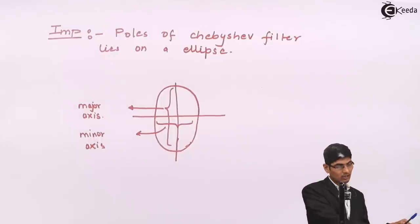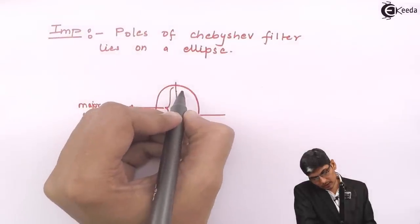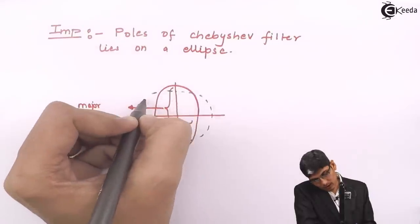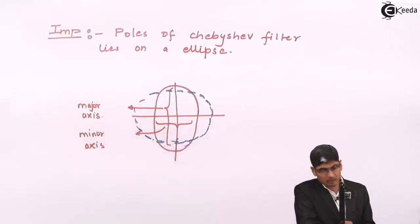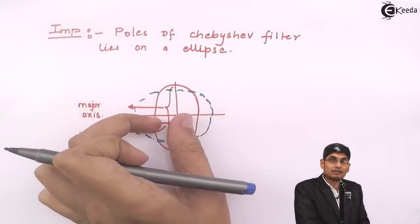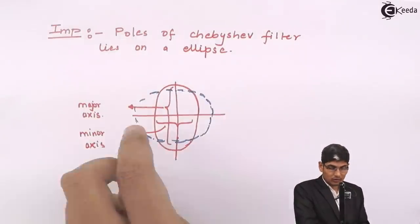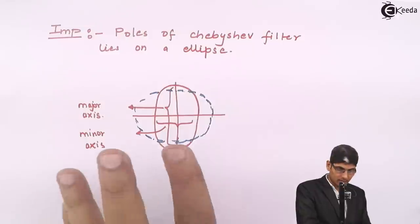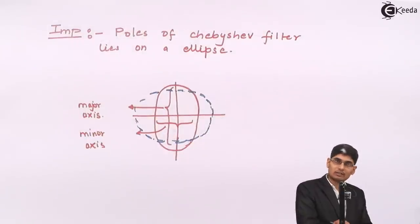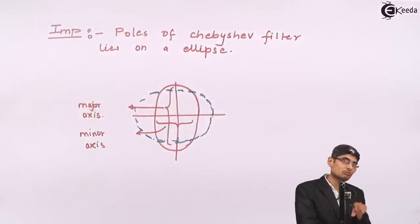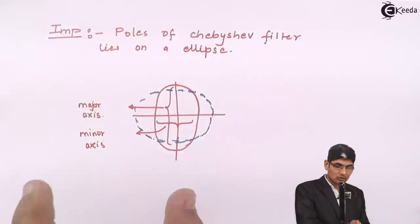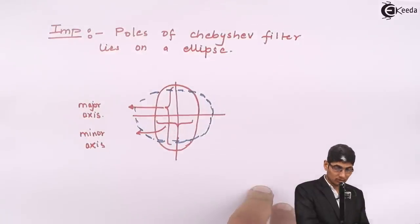The squeezing factor (small r) compresses the pole radius and is less than 1, while the elongating factor (capital R) is greater than 1. We start by marking poles on a circle as in Butterworth, then apply these two scaling factors. For Butterworth, the pole angle is θ_k = π/2 + (2k+1)π/(2n), for k = 0, 1, 2, ..., n−1.